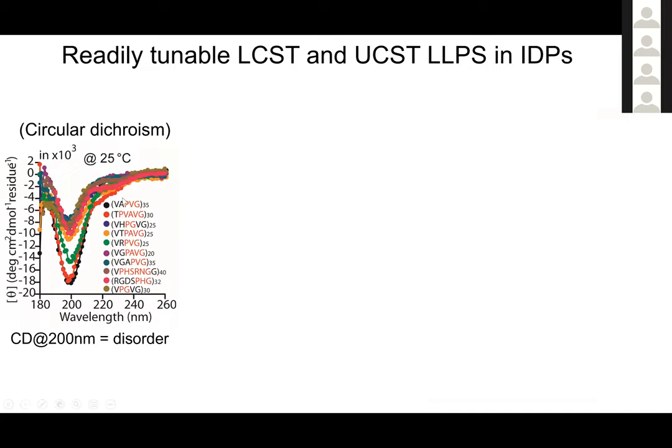We first showed this is a very robust blank slate. At room temperature, looking at circular dichroism — a simple way to assess disorder — regardless of what kinds of spacers or additions we made, we would always end up with a disordered protein. That was good for us.